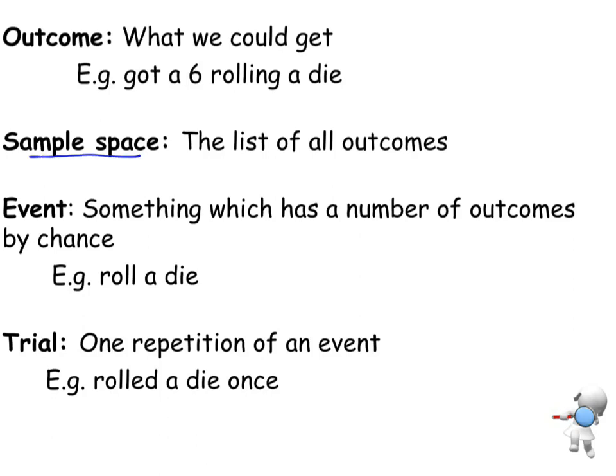A sample space. This is the list of all the outcomes. So for example, if I'm rolling a dice, all of the outcomes, what could I get? I could get a 1, or a 2, or a 3, or a 4, or a 5, or a 6. Those are all the possibilities I could have. And that's what the sample space is. A list of all the possibilities.